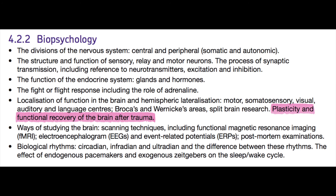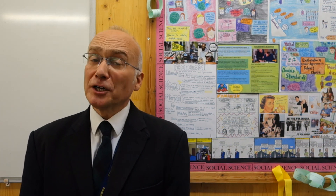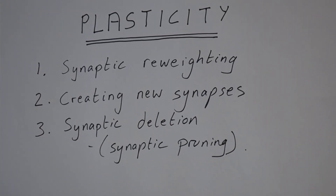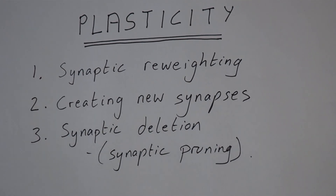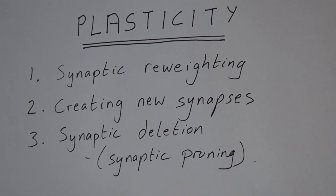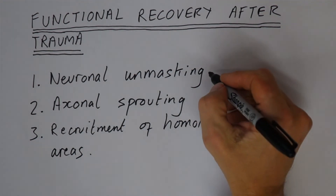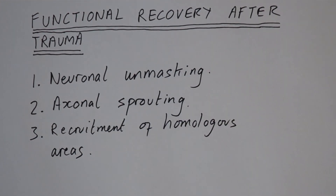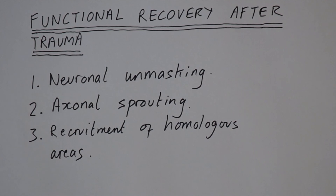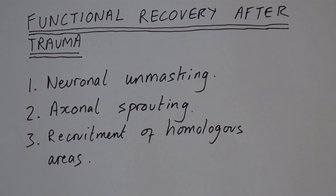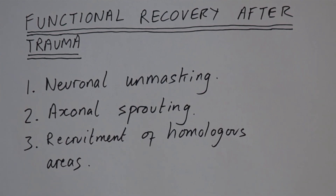This video has been about plasticity and functional recovery after trauma. We have looked at three methods of plasticity: synaptic reweighting, creating new synapses, and removing or deleting other synapses — which is called synaptic pruning. In functional recovery after trauma, we've looked at neuronal unmasking, which is a form of synaptic reweighting, axonal sprouting, and the recruitment of homologous areas.